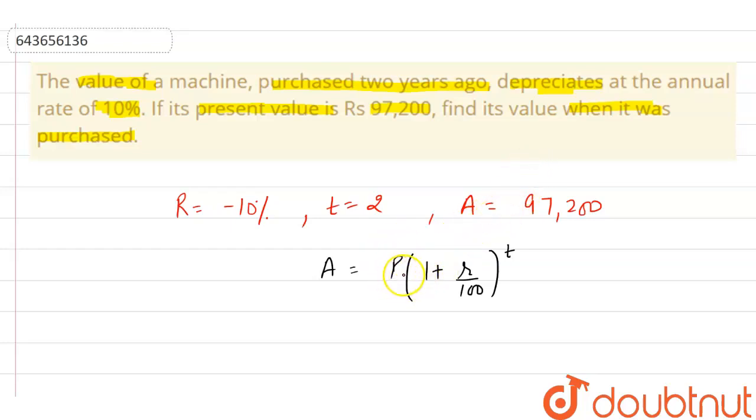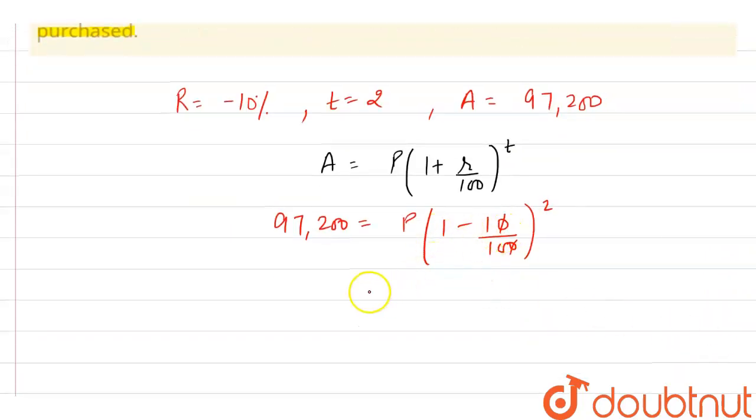So 97,200 = P(1 - 10/100)^2. Since R is -10%, it becomes 1 - 10/100. Simplifying, 1 - 10/100 = 9/10, so we get 97,200 = P × (9/10)^2 = P × 81/100.